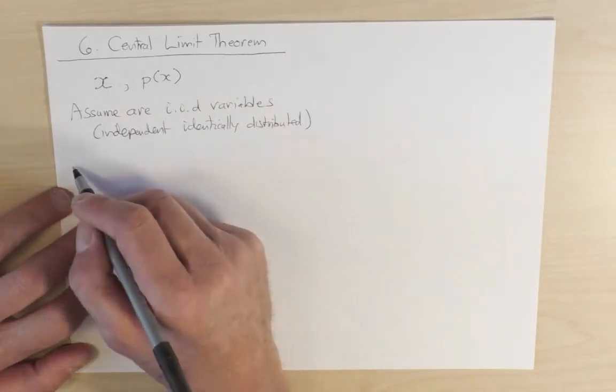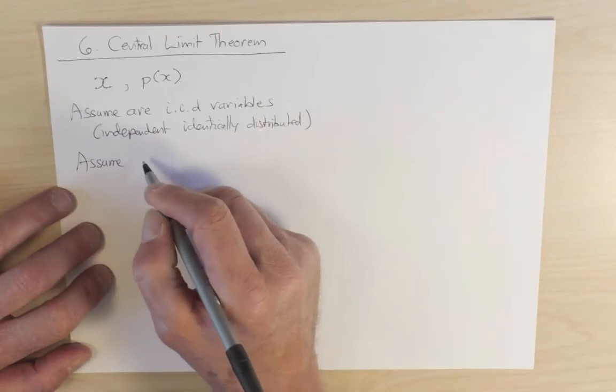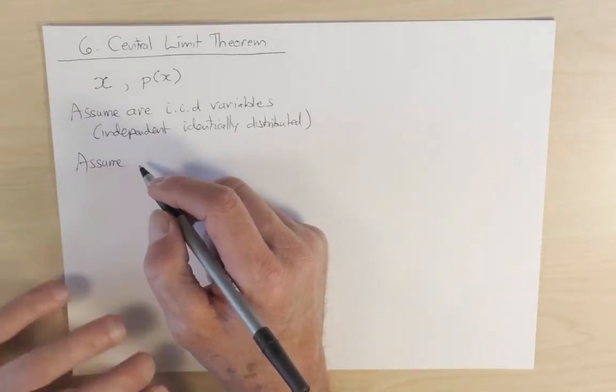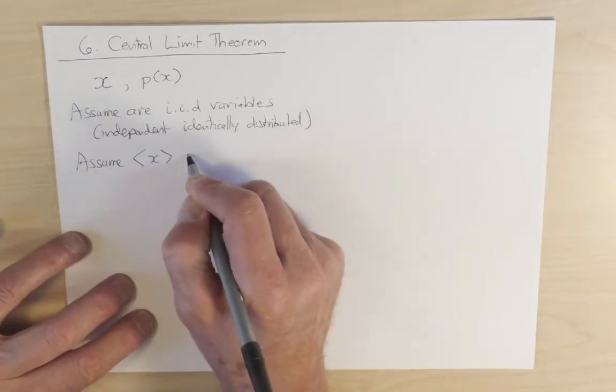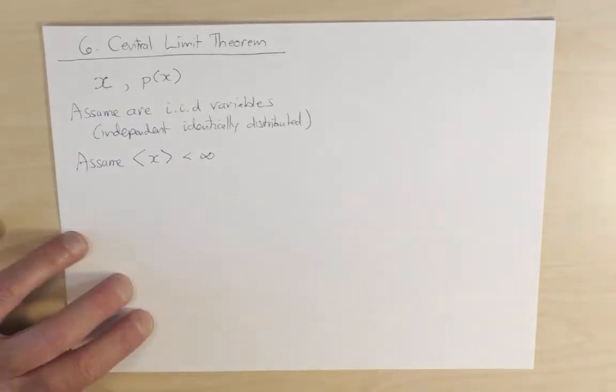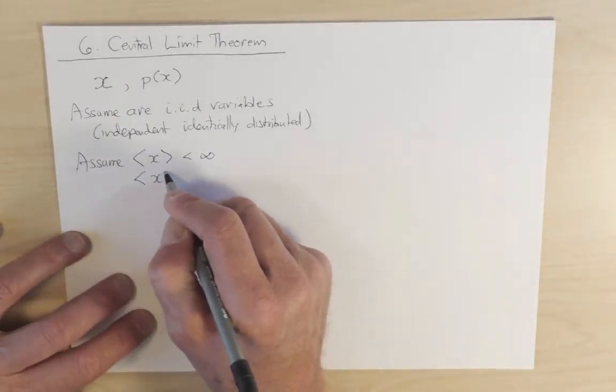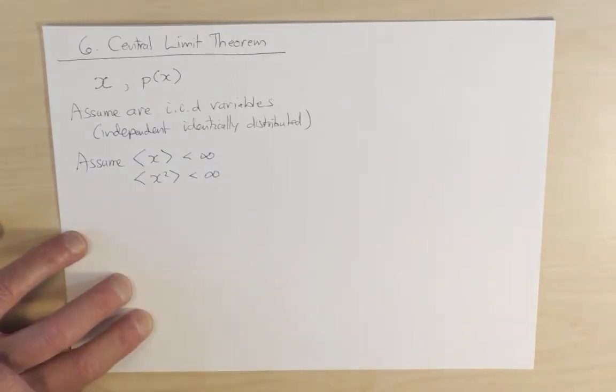Let us further assume that the mean displacement in a single step, so we no longer have to restrict ourselves to a symmetrical random walk. Let me assume that the mean displacement in a single step is finite, a very mild restriction. And let me also assume that the mean squared displacement in a single step is also finite.